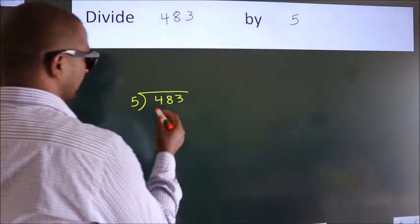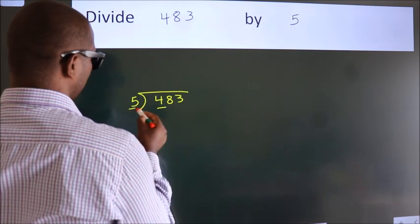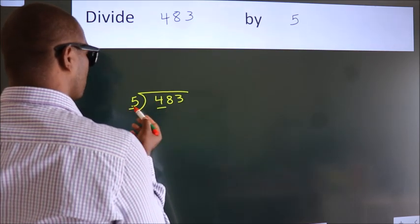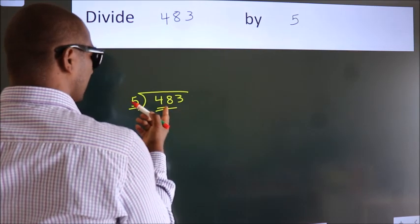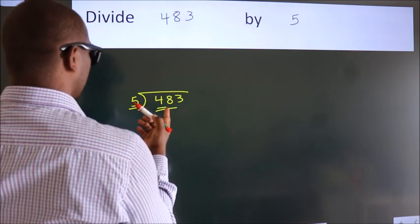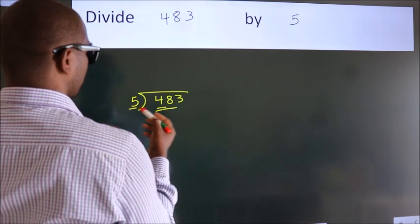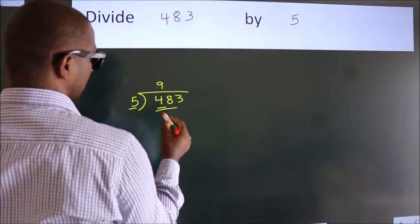Next. Here we have 4, here 5. 4 smaller than 5. So we should take two numbers, 48. A number close to 48 in 5 table is 5 nines 45.